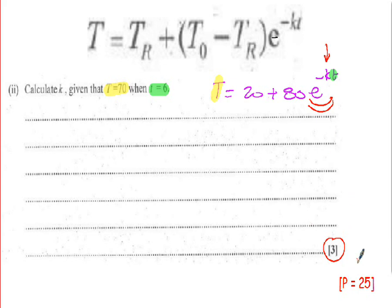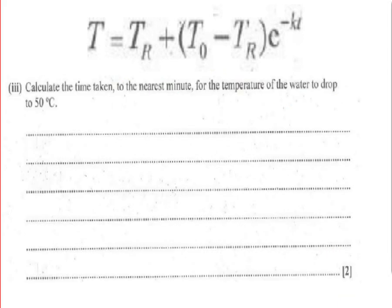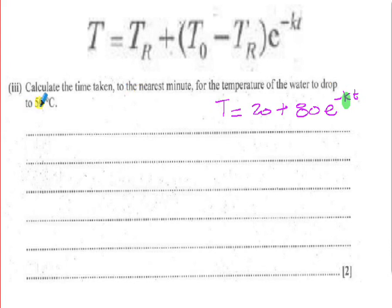Just for reference: if you've got everything right up to this stage, you would have approximately 25 marks and would have passed the exam without going any further. Part three says: calculate the time taken to the nearest minute for the temperature to drop to 50°C. You're using the same equation, with the value of k already found, but this time T = 50 and you solve for the lowercase t — the time. Very similar rearrangement.